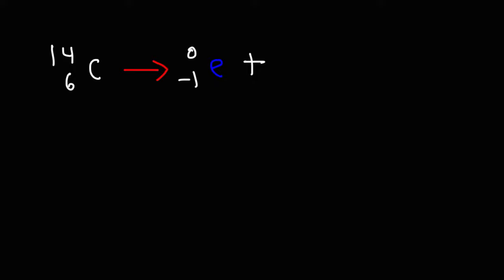In order to do that, we need to make sure that this reaction is completely balanced. There are two numbers of interest. The 6 represents the atomic number of the element carbon, which is equal to the number of protons in this particular element, which is the same as the charge on the nucleus. The top number, the 14, represents the mass number of the element. It's the sum of the number of protons and neutrons.